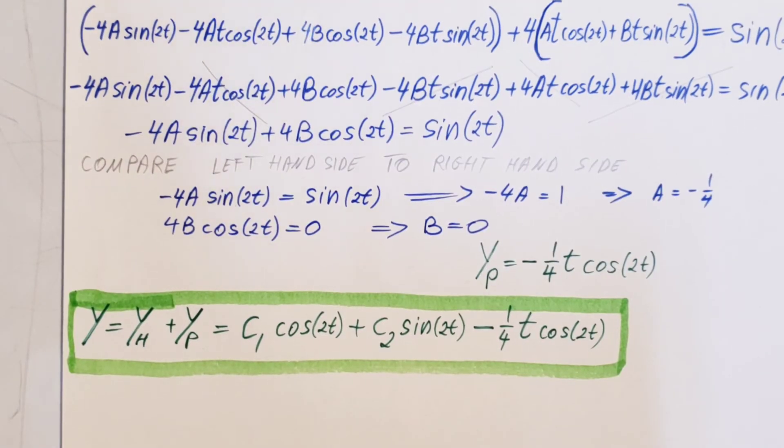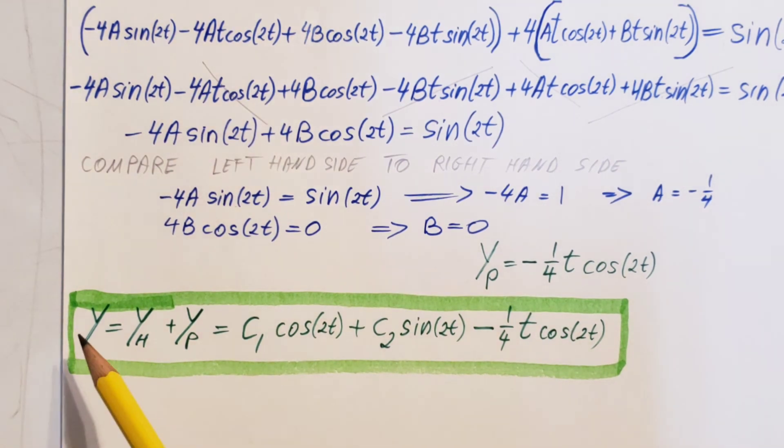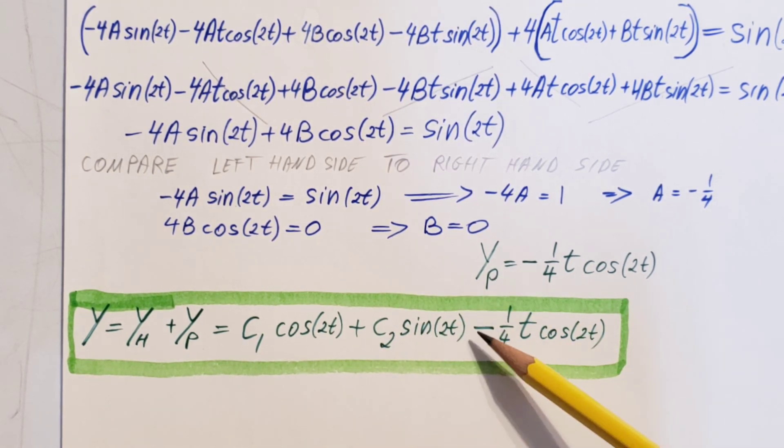And for the final step, we're gonna write up our solution for the ODE, which is the homogeneous solution plus the particular solution. It is c1 cosine 2t plus c2 sine 2t minus 1 fourth t cosine 2t. And this is our solution for the ODE.